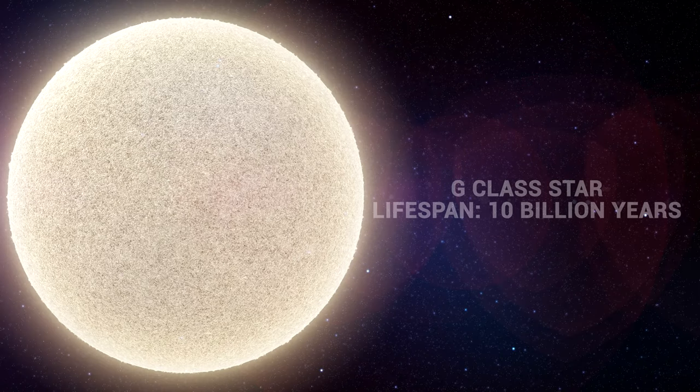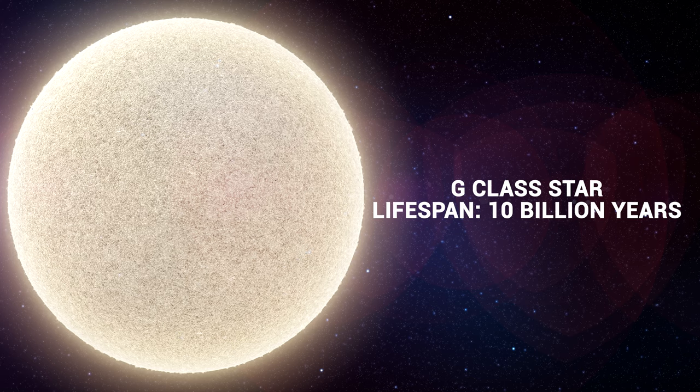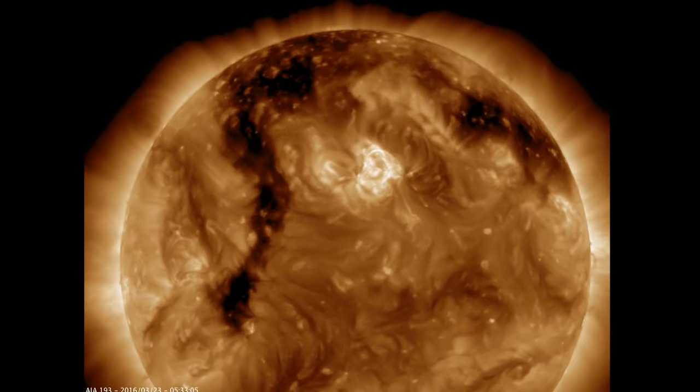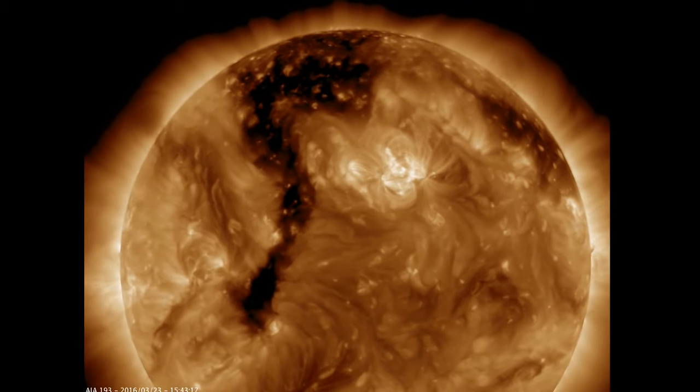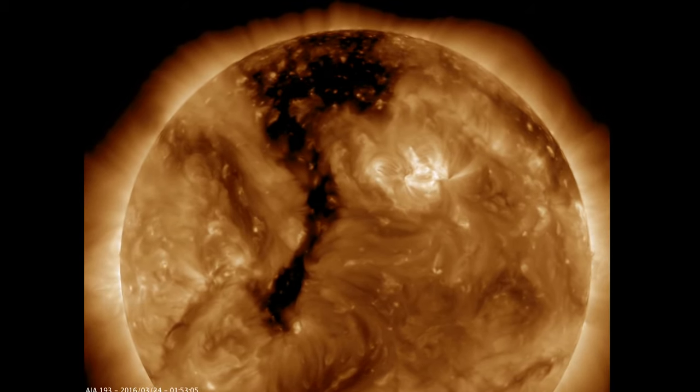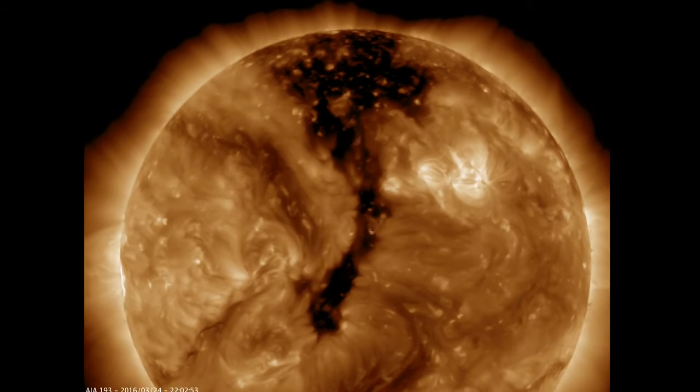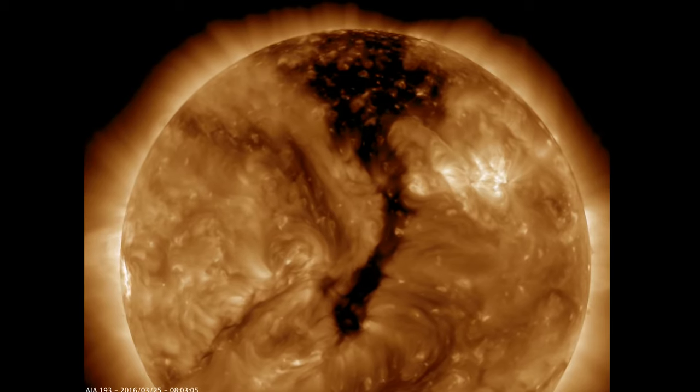G-class stars include our sun. They range in colour from yellow to white. Interestingly enough, our sun is not actually yellow, but it's white. The sun appears yellow to us on Earth because of our atmosphere, which scatters and changes the appearance of the colour to yellow on the ground. These G-class stars can live double as long as F-class stars, at 10 billion years.